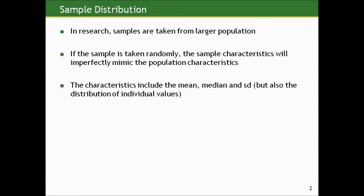So again, if a sample is taken randomly, the sample characteristics will imperfectly mimic the population characteristics. We've already said that the sample mean is our best guess for the population mean, the sample median is our best guess for the population median, et cetera. But also, as it turns out, another statistic we generate from a sample is actually our sample distribution — that is our best guess based on our sample data as to what the distribution of all data values looks like in the population we cannot observe.